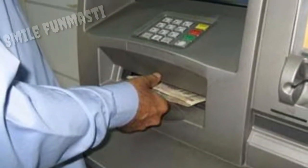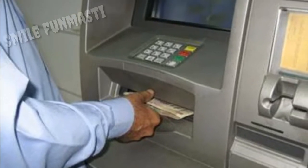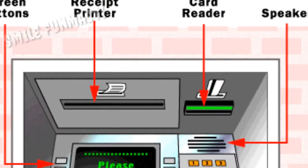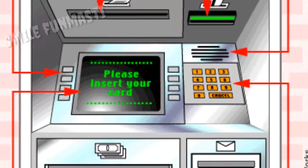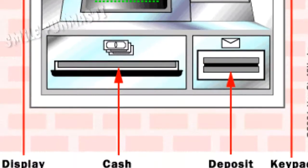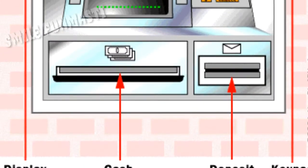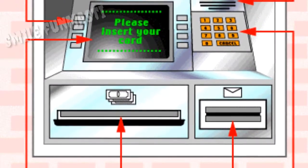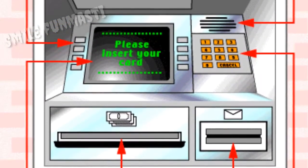Since the ATM machine manages money, most ATMs have two inputs and four outputs. The card reader and keypad are inputs, and a screen, receipt printer, cash dispenser, and speaker are outputs.